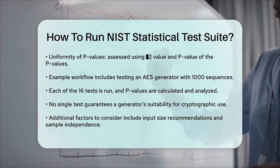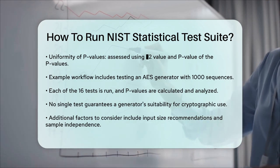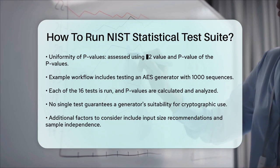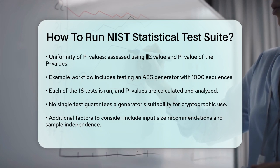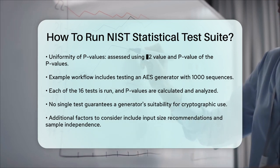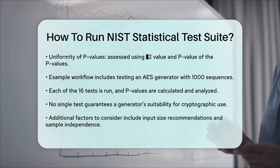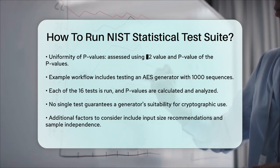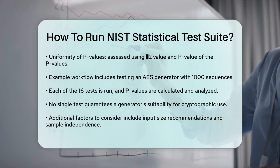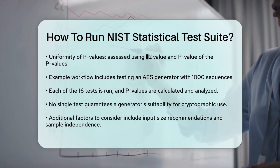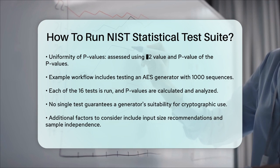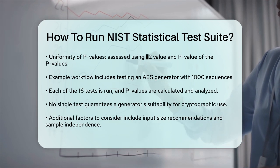It's important to note that no single test can absolutely certify a generator as suitable for cryptographic applications — these tests are just a first step. You should also consider other factors like the input size recommendations for each test and ensure that your sequences are independent samples. By following these steps, you can effectively use the NIST Statistical Test Suite to evaluate the randomness of your binary sequences and ensure they meet the necessary standards for cryptographic applications.